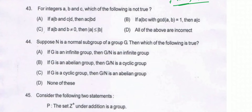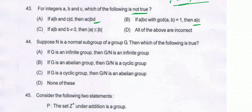For integers A, B and C, which of the following is not true? If A divides B and C divides D then AC divides BD — that is a true statement. If A divides BC with GCD of A and B equal to 1, then A divides C — also true. If A divides B and B is not equal to 0, then mod A is less than or equal to mod B — also true. Option D says all of the above are incorrect, but actually all of the above are correct, so option D is the correct answer.